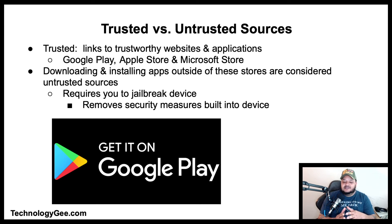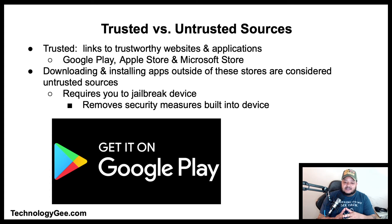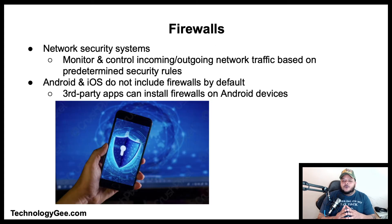Trusted sources are links to trustworthy websites and applications. Google Play for Android, the Apple Store for iOS, and the Microsoft Store for Windows 10 Mobile are trusted sources for downloading and installing apps. Downloading and installing apps outside of these stores is considered using untrusted sources, and often requires you to jailbreak the device, which removes the security measures built into it.